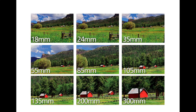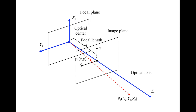At a small focal length, the image plane is brought closer to the focal plane, resulting in a smaller, wider-angle view — you're collecting more light. Increasing the focal length gives a more telephoto, zoomed version, because the cone of light striking the image plane is narrower.